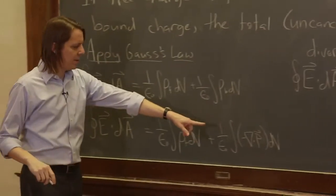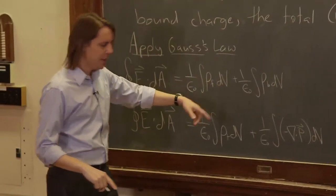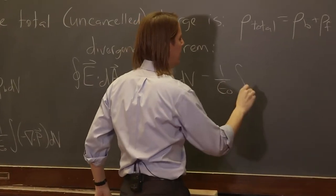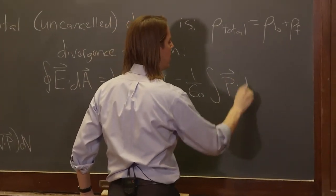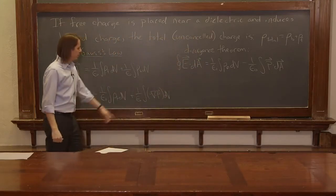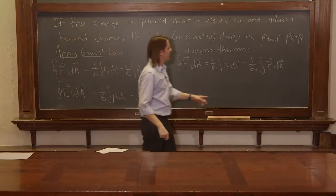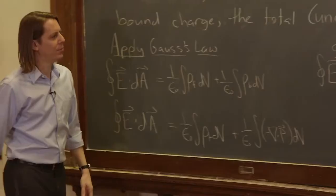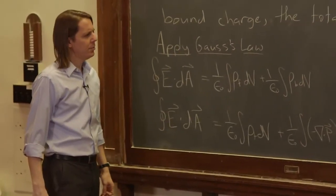But then the negative sign is going to stay and it's going to become minus one over epsilon naught, the integral of P dot dA. The integral of a derivative in a region is related to the value at the boundary. We've turned it into that.